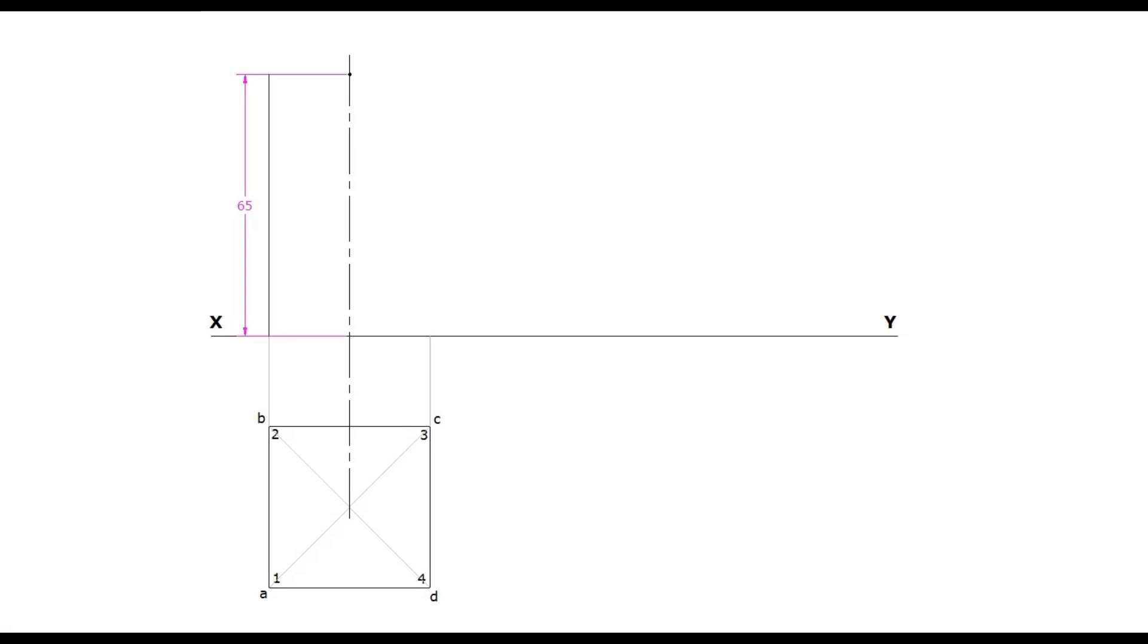Now, complete the elevation. In the elevation, bottom base corners are named as 1', 2', 3' and 4'. Similarly, the top base corners are A', B', C', and D'.